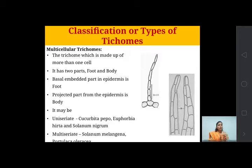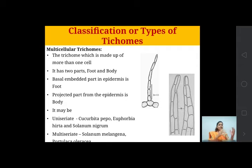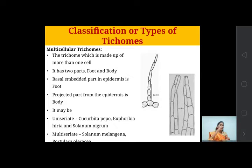Next is multicellular trichomes. In unicellular, it is made up of only a single cell, but in multicellular, it is made up of more than one cell — a number of cells together forming a multicellular structure. These hair-like projections from the epidermis, made up of more than one cell, are the multicellular trichomes.